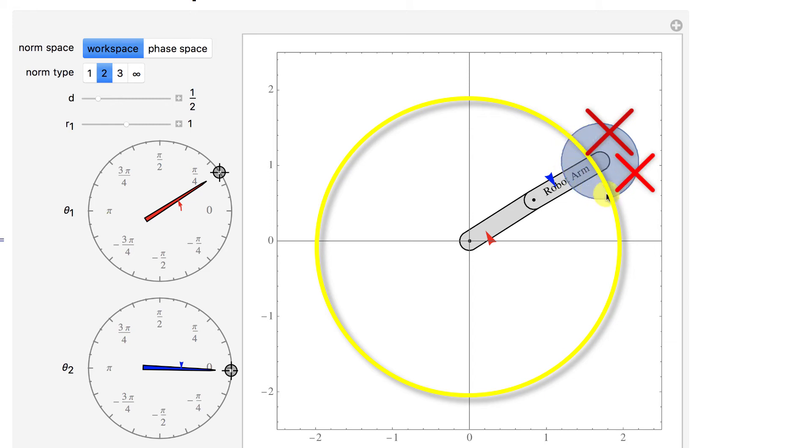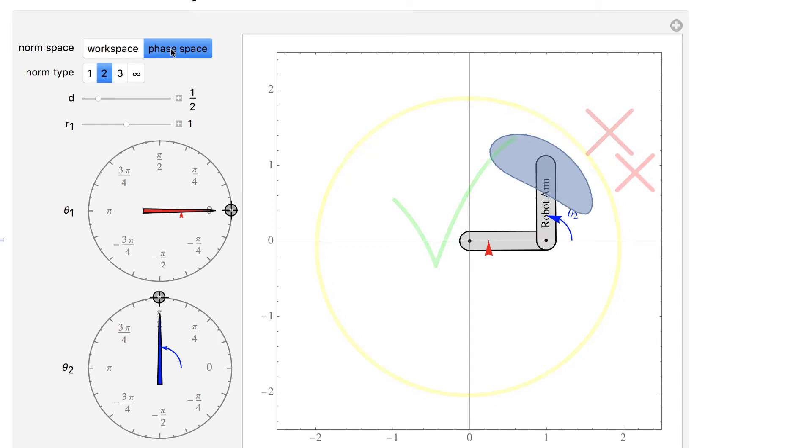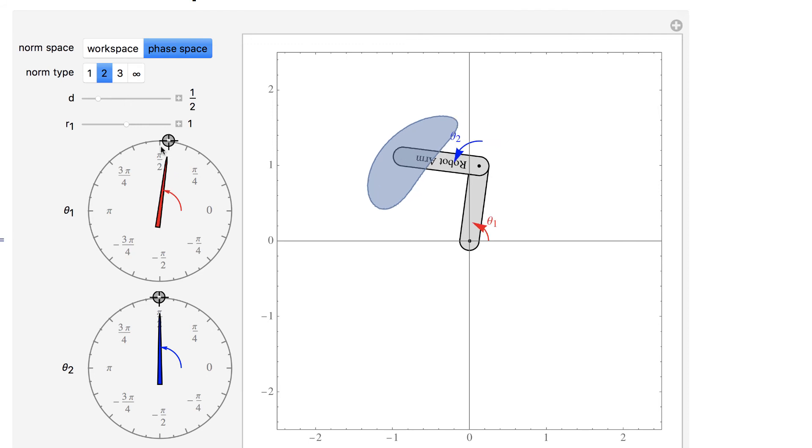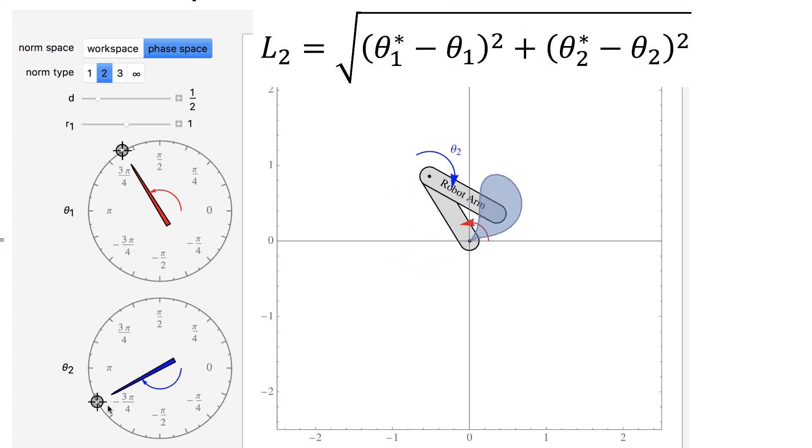It is more correct to calculate the set of configurations with distance less than d in the phase space of the robot, and then map this set into the workspace. The norms are calculated as before with theta1 and theta2 instead of x and y. The mapping to the workspace is performed using Mathematica's parametric plot command.